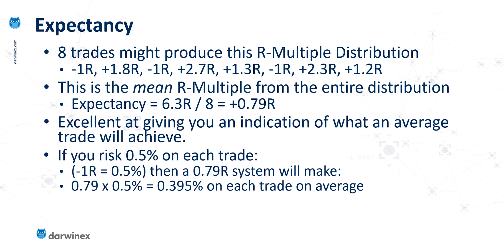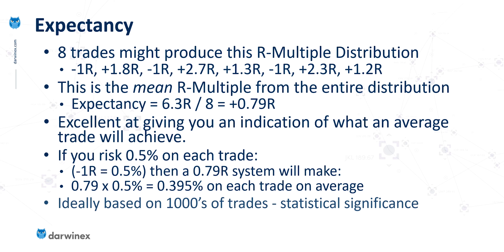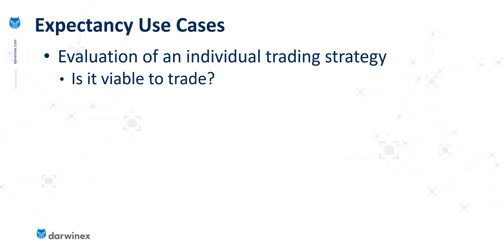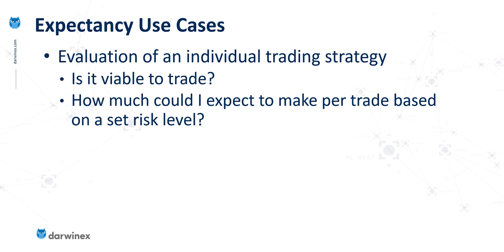This illustration was based on just 8 trades, and believe me, that is no trades at all — it would have no statistical significance whatsoever. Ideally, when you perform these calculations you should be basing them on thousands of trades, and only then are you going to get statistically significant results that will have any real meaning. When you do that, it means you can perform an evaluation of individual trading strategies to decide, firstly, whether they are viable to trade, and secondly, get an indication of what you could expect to make per trade based on a set risk level — and then, based on the number of trades, what the annual return might look like.